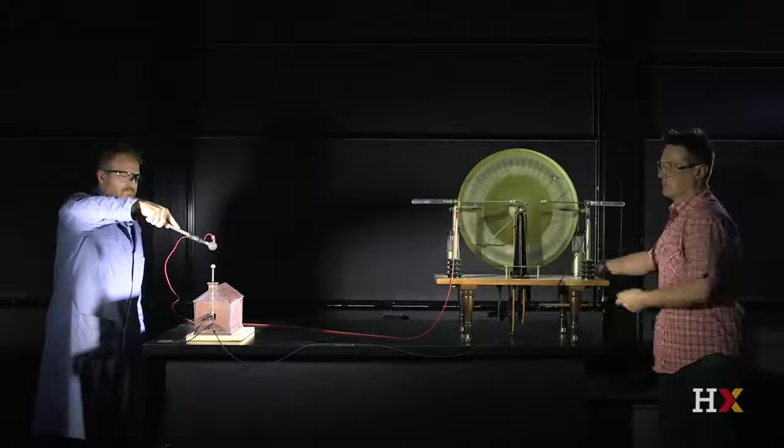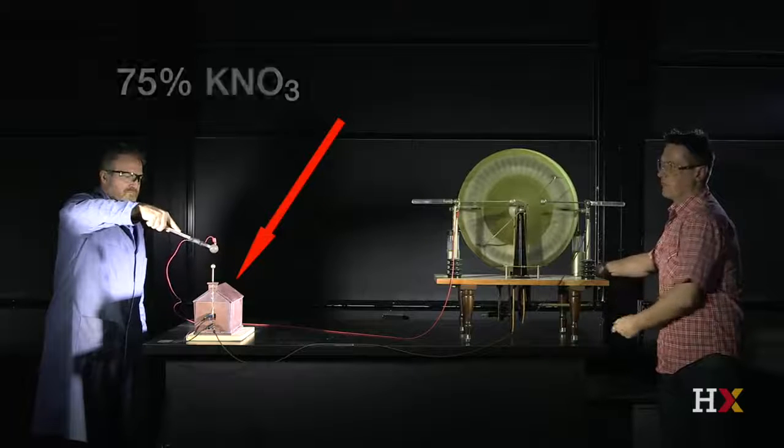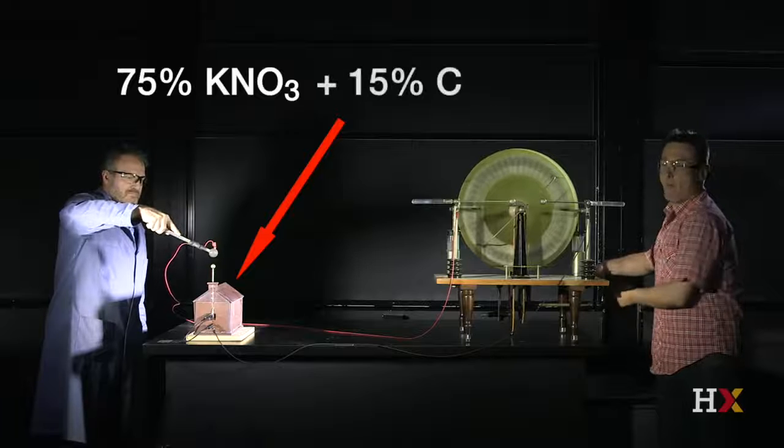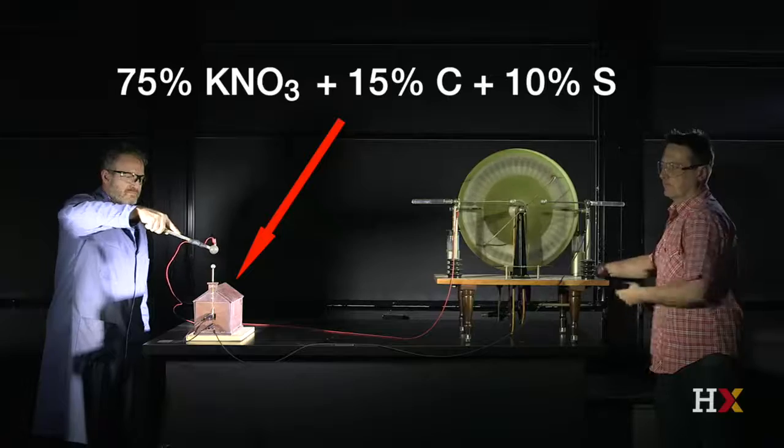Daniel and Alan have set up the Thunderhouse, which is filled with gunpowder, whose chemical composition is 75% potassium nitrate (KNO3), 15% charcoal (C), and 10% sulfur (S).